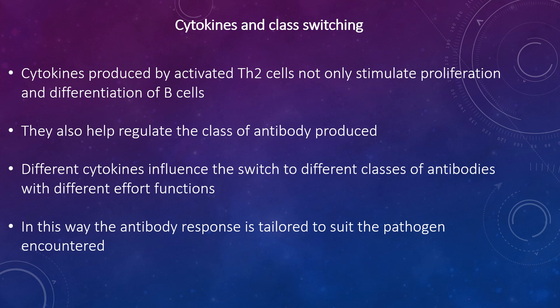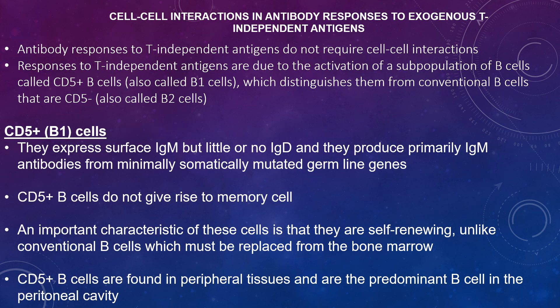For example, IgE antibodies are produced for parasitic worm infections. Secondary responses to T-independent antigens do not require cell-to-cell interactions. The polymeric nature of these antigens allows cross-linking of antigen receptors on B cells, resulting in activation, but no secondary responses, affinity maturation, or class switching occur. Responses to T-independent antigens are due to the activation of a subpopulation of B cells called CD5-positive B cells, also called B1 cells, which are distinguished from conventional B cells that are CD5-negative, also called B2 cells.